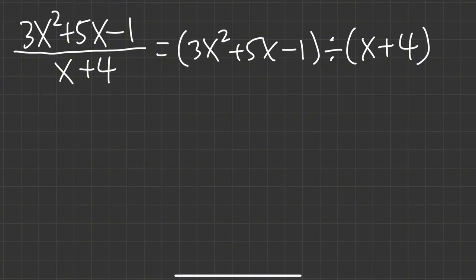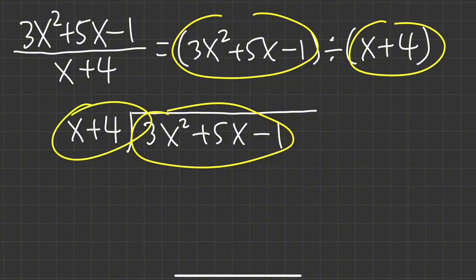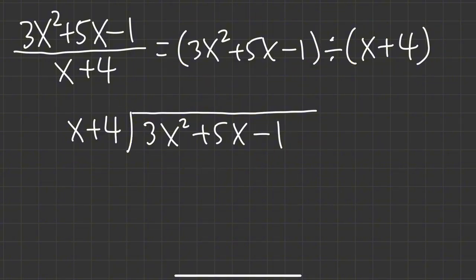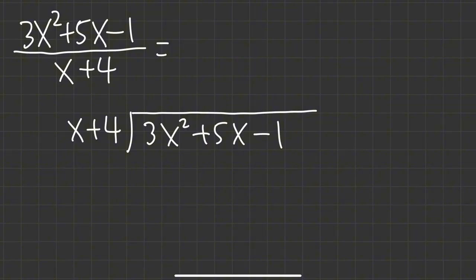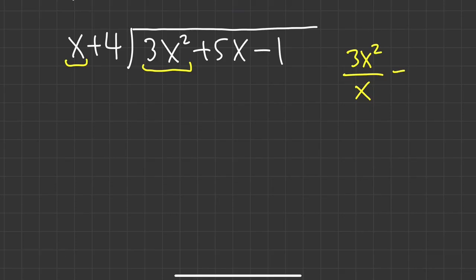So when we have this, let's go ahead and draw the long division symbol. Put the top inside — so we have 3x squared plus 5x minus 1 — and then put the bottom on the outside. To begin, we are going to pay attention to the first term from the inside and compare that with the first term from the outside. We do 3x squared divided by x, which gives us 3x. So that's what we need first.